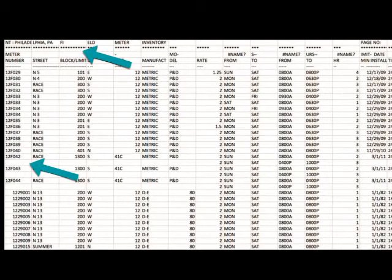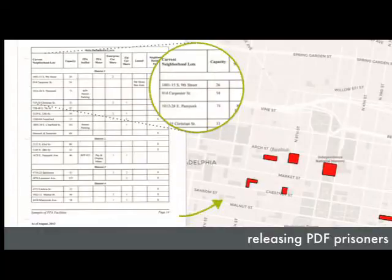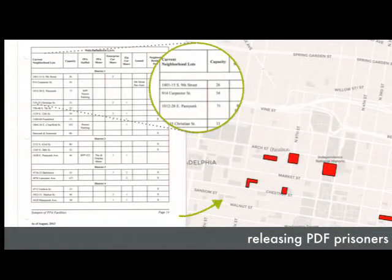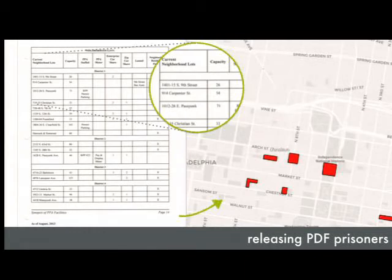We've had a few initial meetings with the parking authority and ran into a couple of snags — my initial contact at the PPA is departing for DC, so we may have to start over convincing someone else. That's another thing you run into with data: when your contact leaves, you have to start all over again. There's also a PDF of all the residential off-street lots — about 50 of them in Philly — and that listing doesn't exist anywhere else. That's another layer I drew by hand, because I think surface lots should be polygons rather than points.